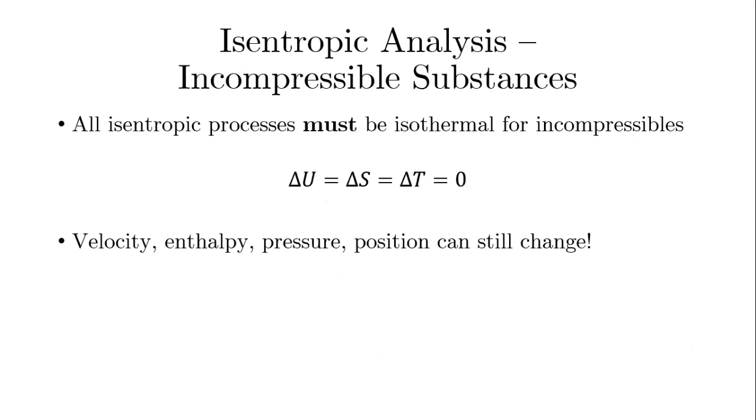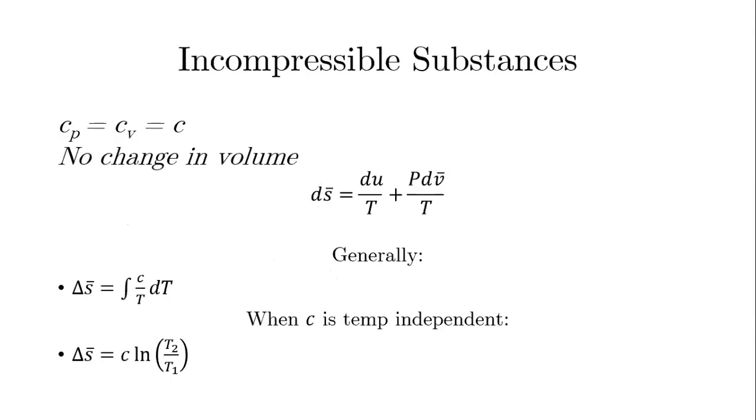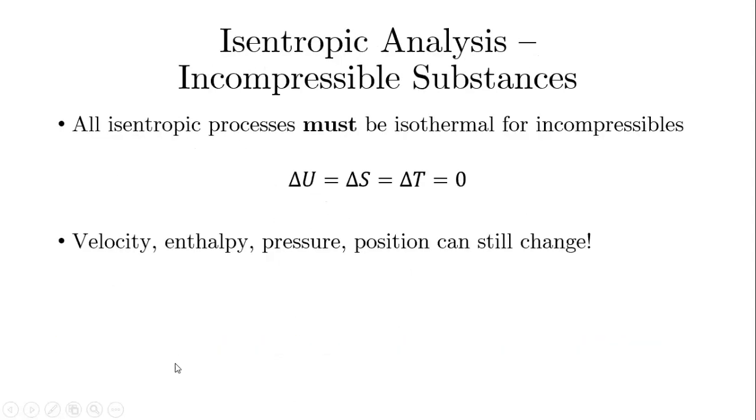For an incompressible substance, if you carry out the idea for an incompressible substance, as we've shown you here, we said that delta S equals C ln of T2 over T1. If you impose that it's isentropic, meaning that this goes away, the only possible thing you could think, because C cannot be zero, the only way to make ln zero is by imposing that T1 equals T2. So for any liquid or anything that cannot be compressed, if the process is isentropic, it is also isothermal. For an incompressible substance, you will see that delta U, delta S, and delta T all equal zero. It's isothermal, it's isentropic, and it has no change in the internal energy. However, things do change for that system, so you can have a change in pressure, position, velocity, enthalpy, and other things.